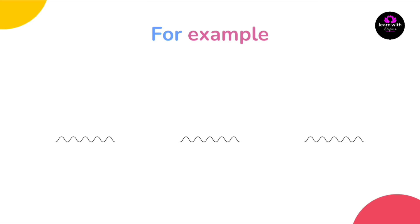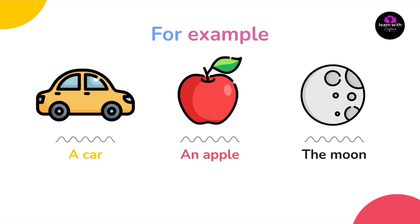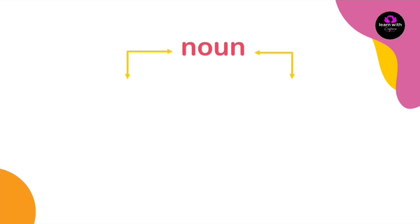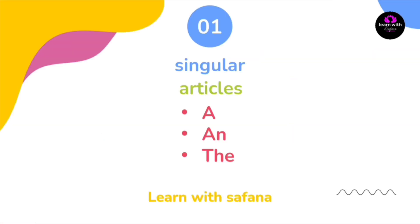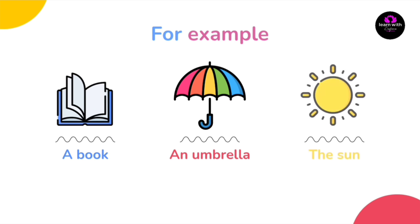الـ articles عندنا بس ثلاثة: a، an، the. ايش نستعمل — a ولا an ولا the؟ قبل ما نعرف، لازم نعرف ان الـ nouns تنقسم قسمين: الاول singular يعني مفرد، والثاني plural يعني جمع. مع الاسماء المفردة نستعمل a، an، وthe. For example: a book، an umbrella، the sun.